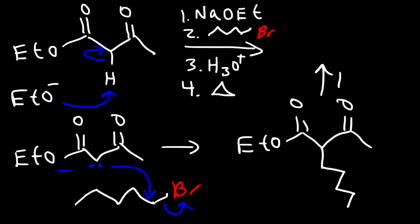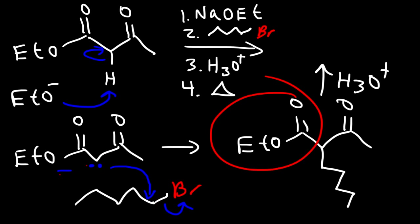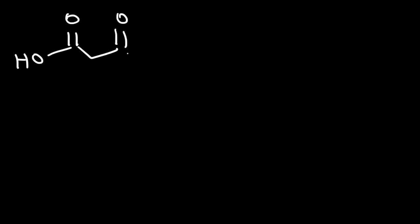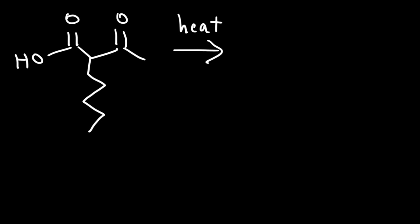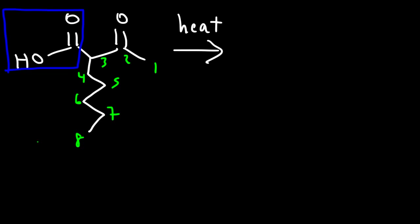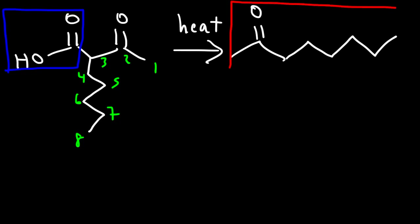In the next step, we're going to add H3O+, and this group is going to be converted into a carboxylic acid. The next thing we need to do is react it with heat to promote decarboxylation — we're going to lose the carboxylic acid. Now let's count the longest chain. The longest chain contains 8 carbons, and we have a ketone on carbon 2. So the product is 2-octanone.